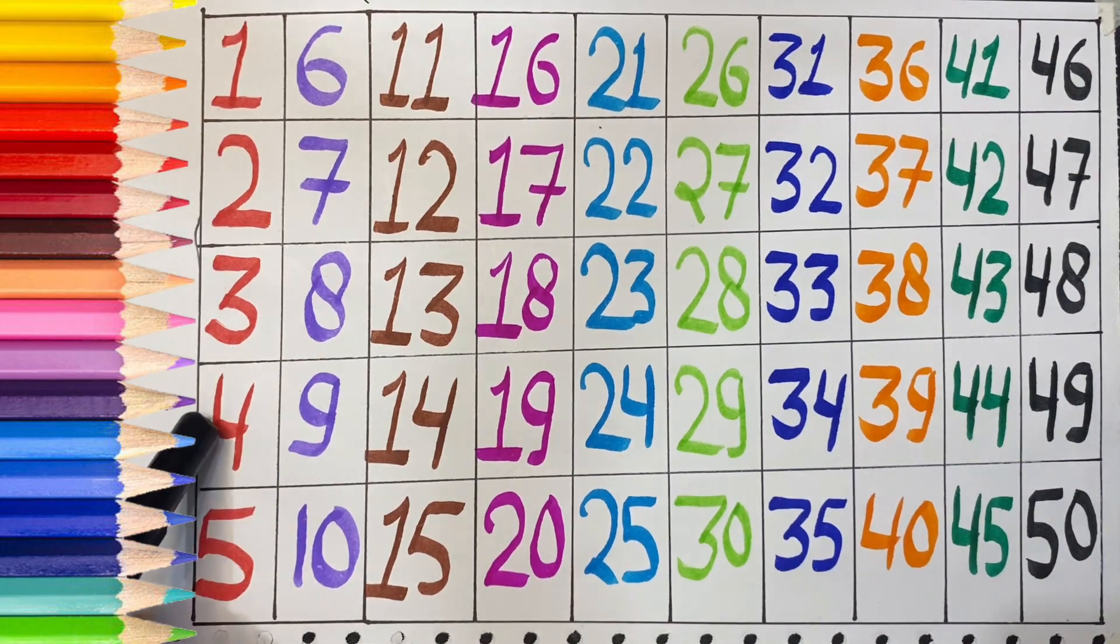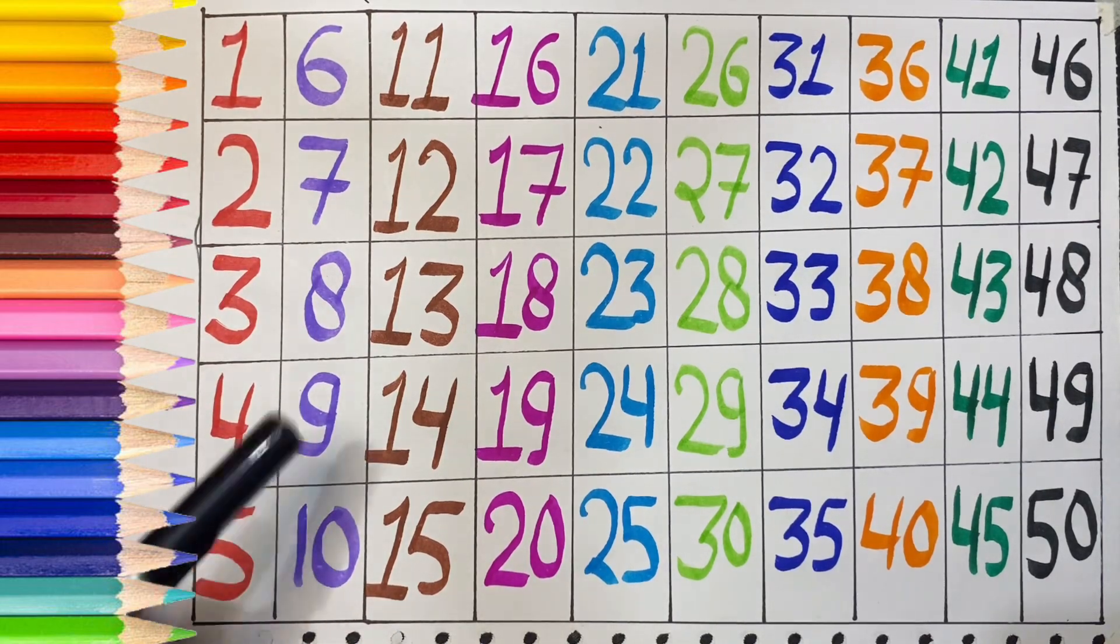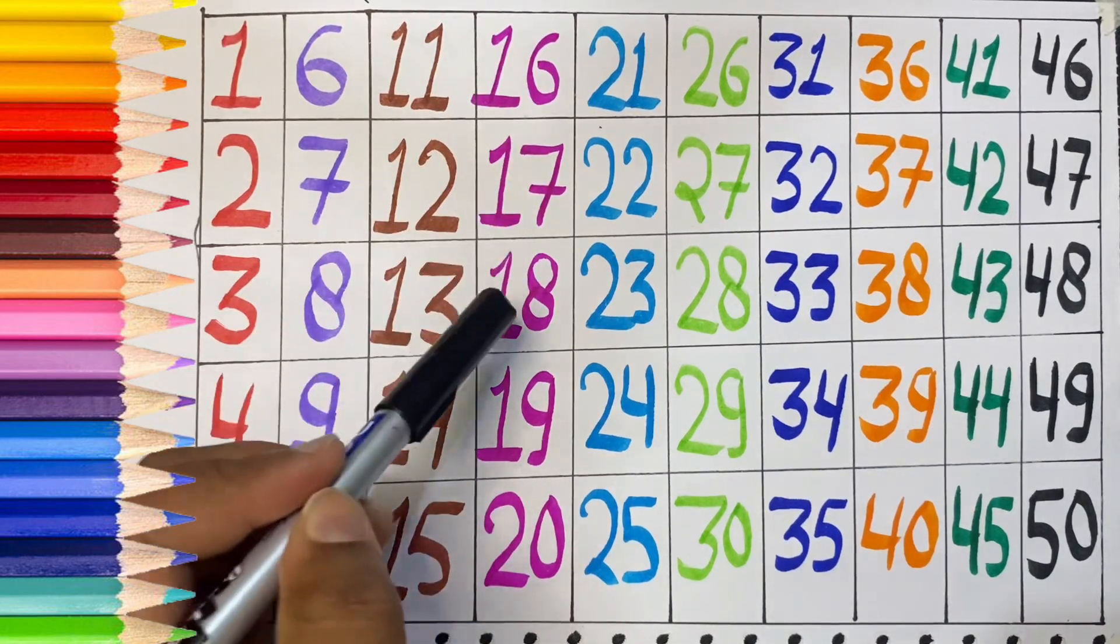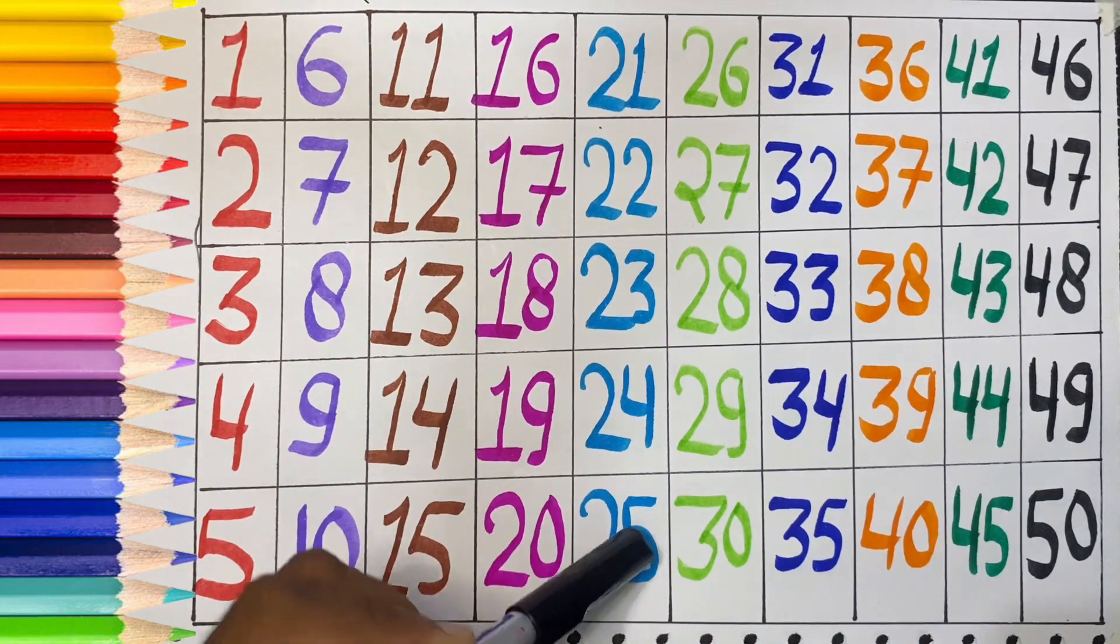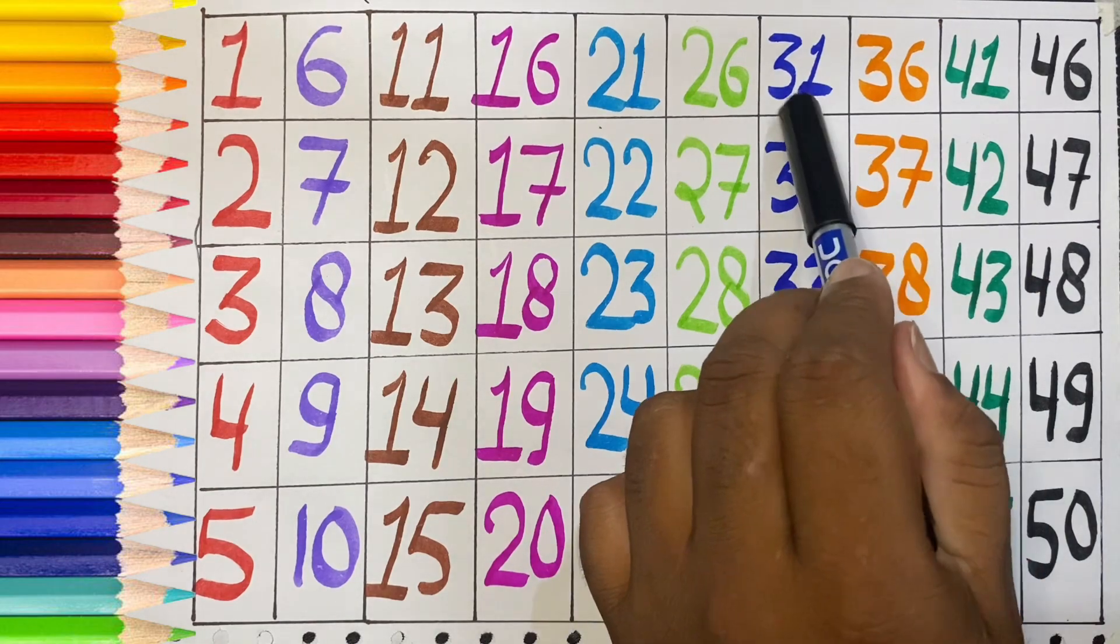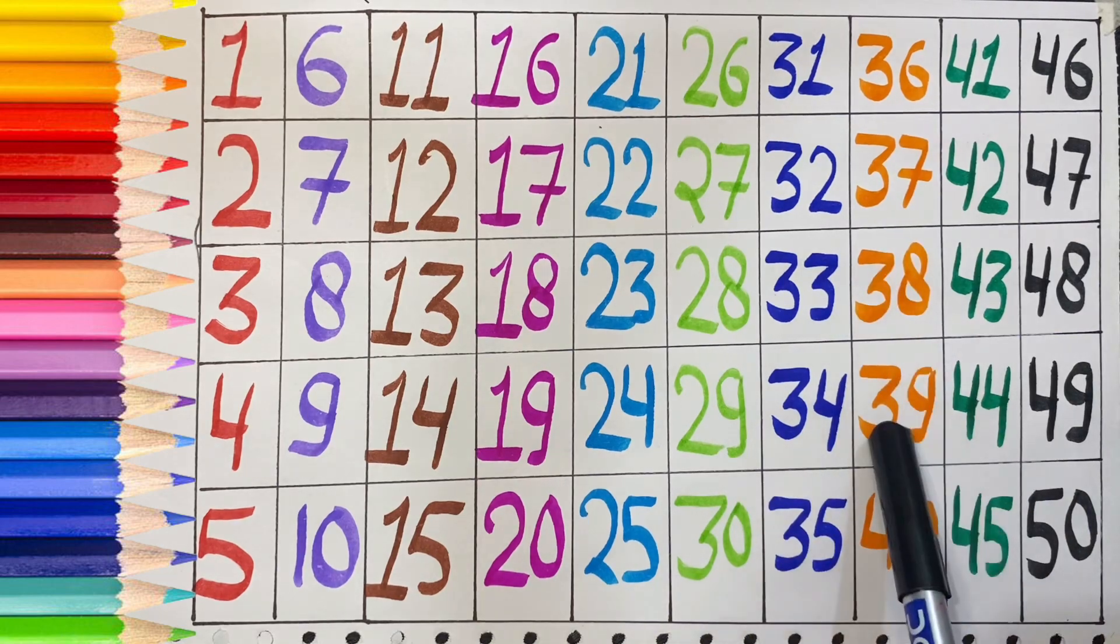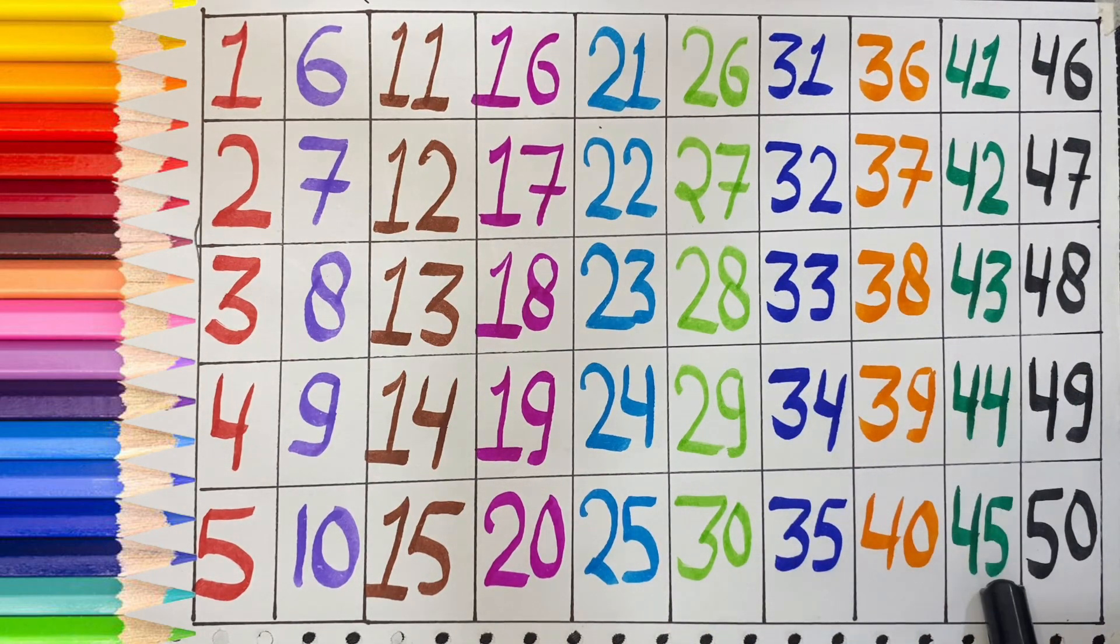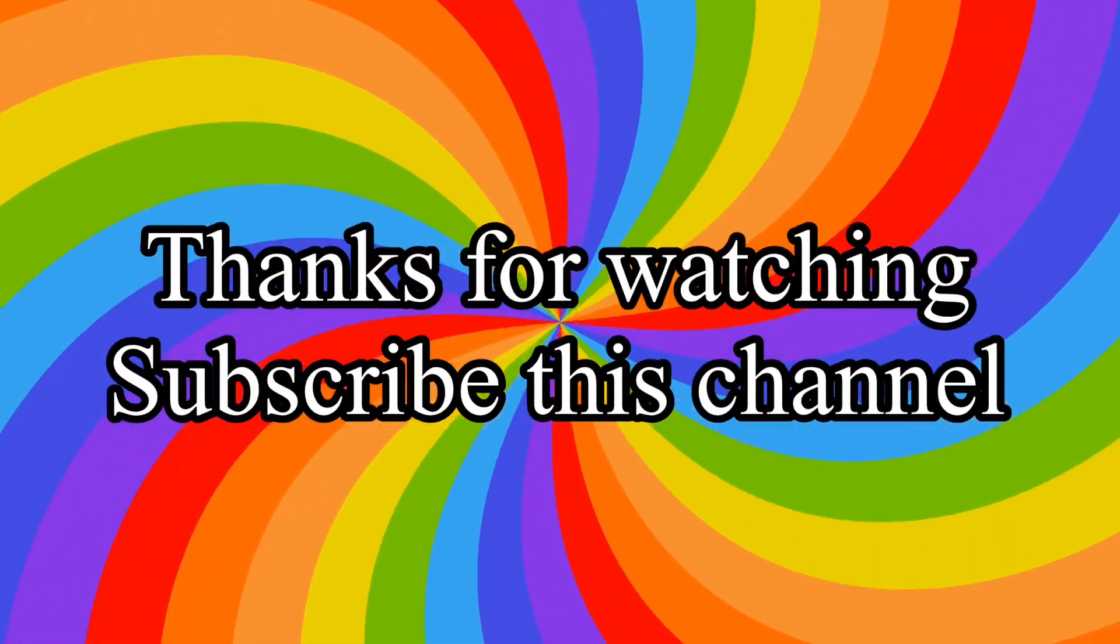1, 2, 3, 4, 5, 6, 7, 8, 9, 10, 11, 12, 13, 14, 15, 16, 17, 18, 19, 20, 21, 22, 23, 24, 25, 26, 27, 28, 29, 30, 31, 32, 33, 34, 35, 36, 37, 38, 39, 40, 41, 42, 43, 44, 45, 46, 47, 48, 49, 50. I love you!